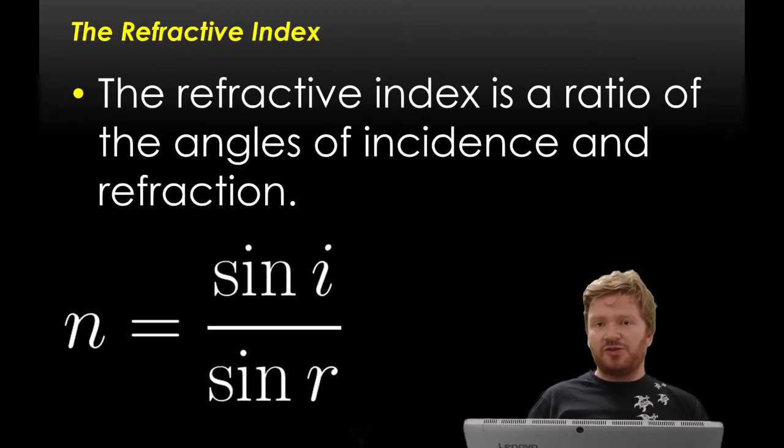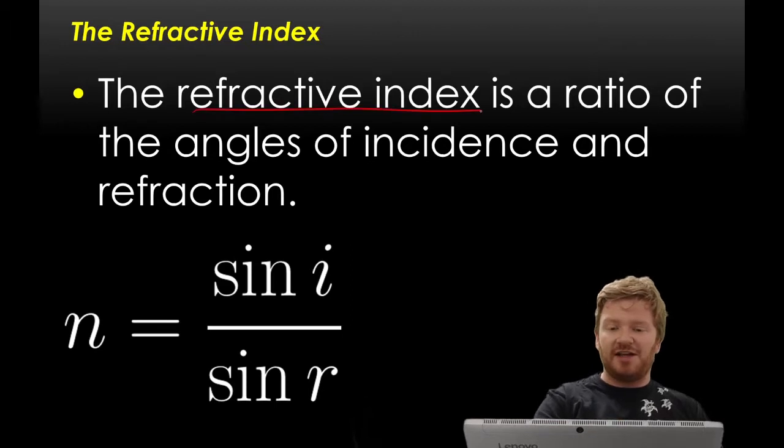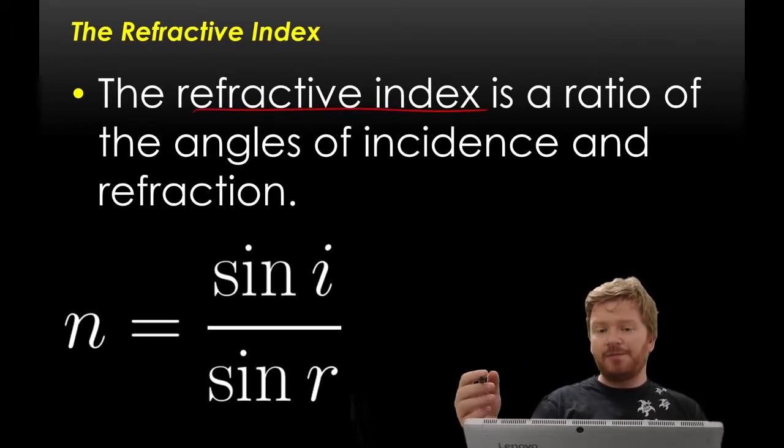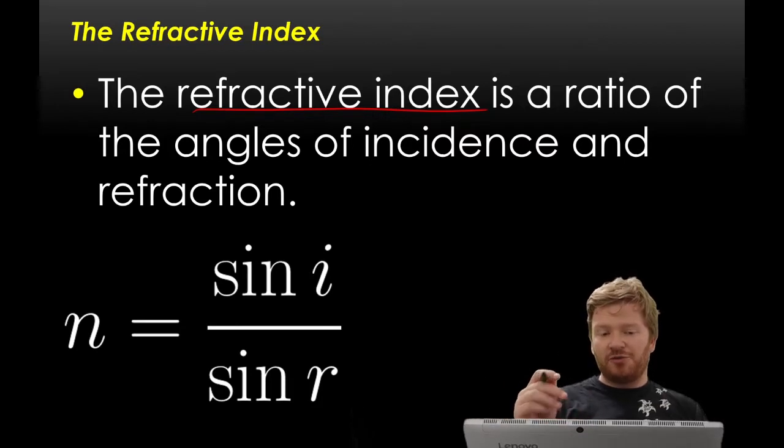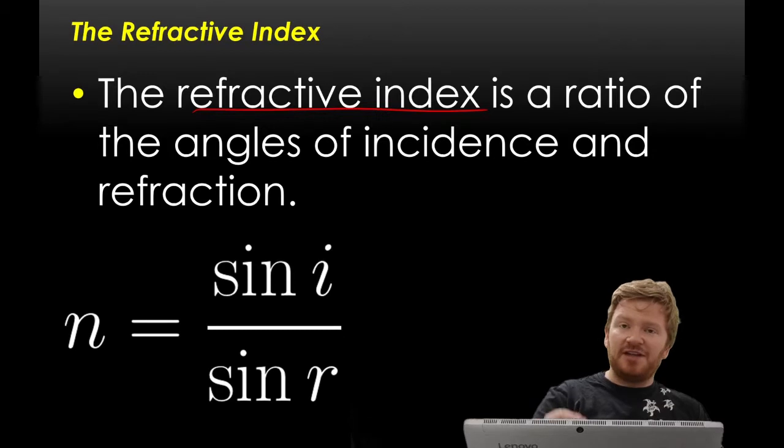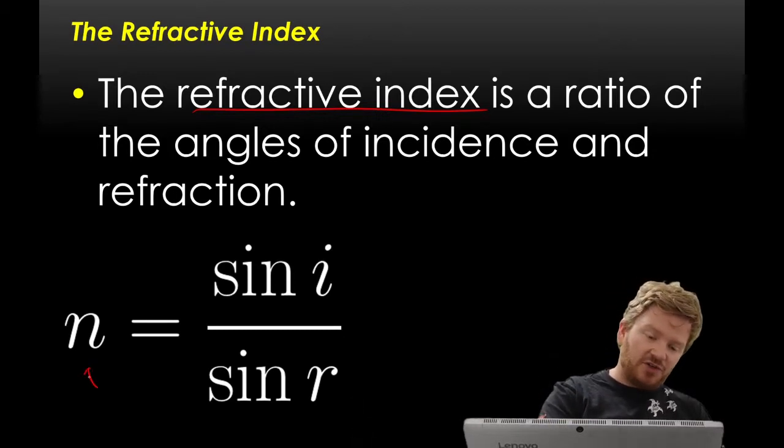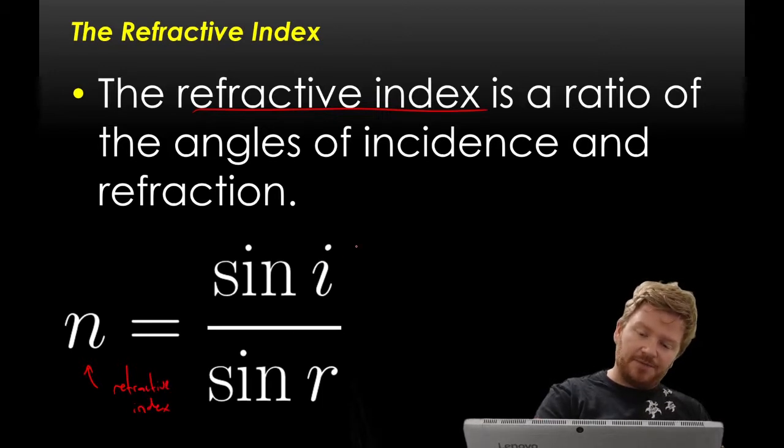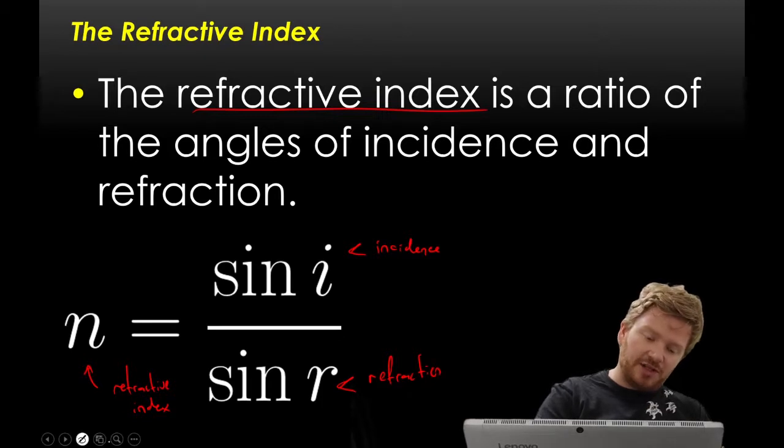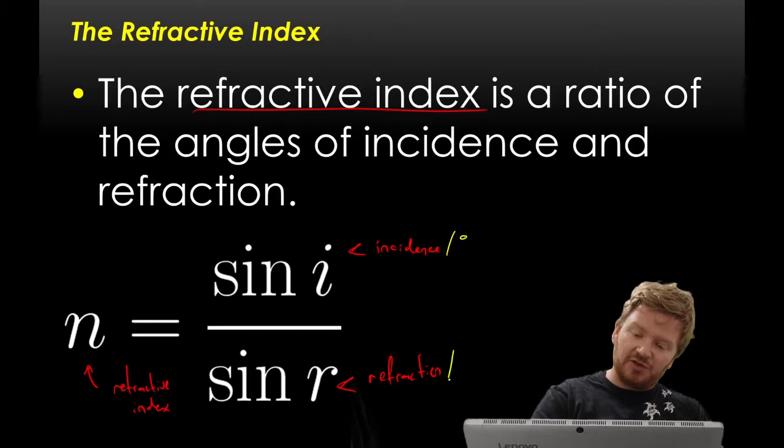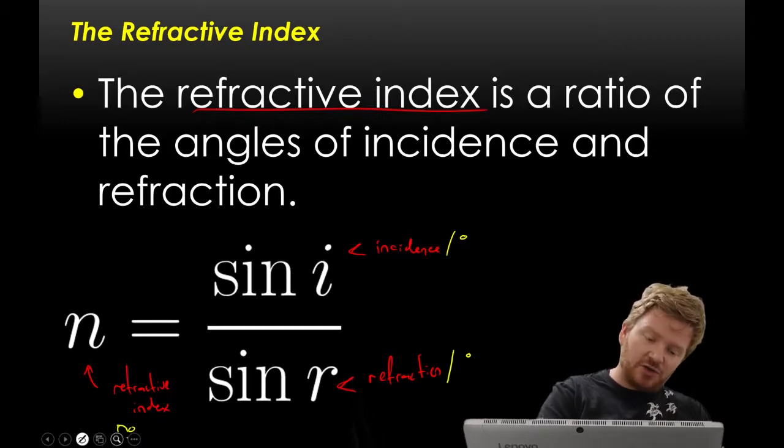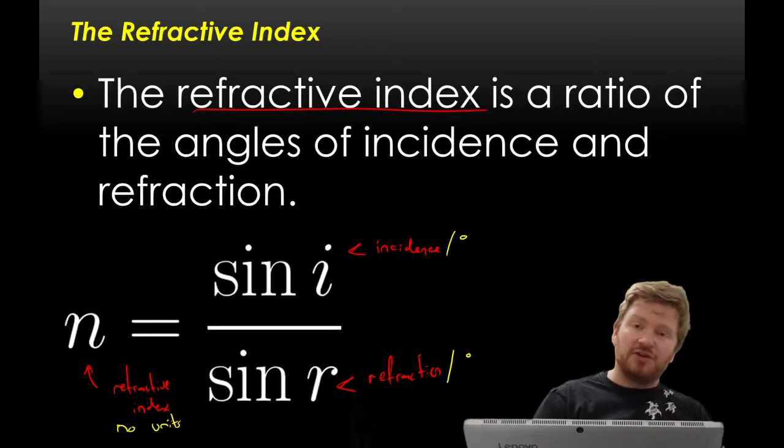Now, this is where we need to introduce a new concept to you, and that is the idea of refractive index. Refractive index is a ratio of the angles of incidence and angles of refraction. We define that by a formula here, n, which is the refractive index, equals sine i, which is the angle of incidence, divided by sine r, the angle of refraction. The angle of incidence is measured in degrees, so is the angle of refraction. Refractive index has no units at all.